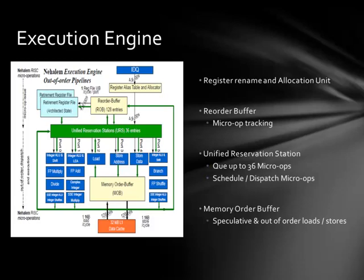The register rename and allocation unit allocates execution engine resources to micro ops in the IDQ and moves them to the execution engine. The reorder buffer tracks all micro operations in flight. The unified reservation station has the ability to queue up to 36 micro operations and schedules and dispatches ready micro ops to the available execution units. Finally, the memory order buffer supports speculative and out-of-order loads and stores, and also ensures that writes to memory take place in the right order and with the right data.